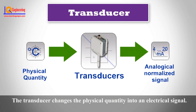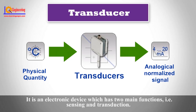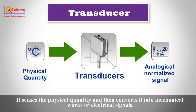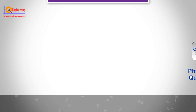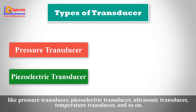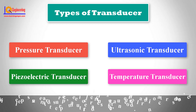The transducer changes the physical quantity into an electrical signal. It is an electronic device which has two main functions: sensing and transduction. It senses the physical quantity and then converts it into mechanical work or electrical signals. There are various types of transducers, like pressure transducer, piezoelectric transducer, ultrasonic transducer, temperature transducer, and so on.